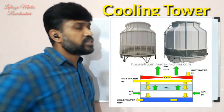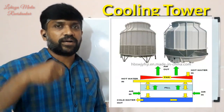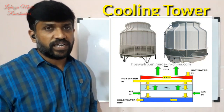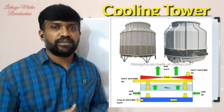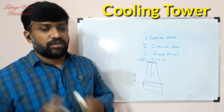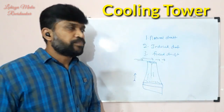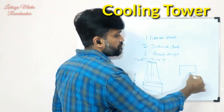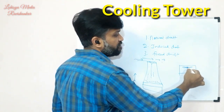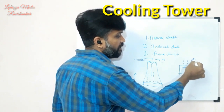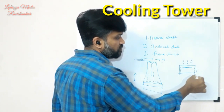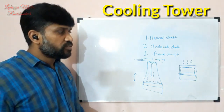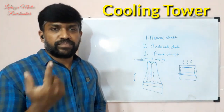Next is induced draft. Induced draft means that air is pulled through the tower. If you have exhaust fans on the top of the tower, that is the induced draft. The fan is placed at the top, and air flows in from the outside. Water flows down inside. Induced draft towers use a pulling fan — the fan is used to pull air through the tower.